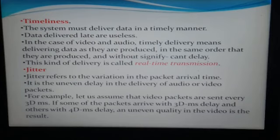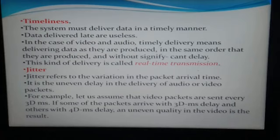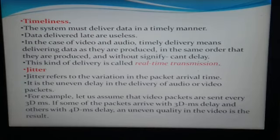The fourth characteristic is jitter. Jitter refers to the variation in packet arrival time — it is the uneven delay in the delivery of audio or video packets. For example, if video packets are sent every 30 ms but some arrive with a 30 ms delay and others with a 40 ms delay, the result is uneven video quality. If the delay is variable, the arrival time changes, meaning the data is not delivered in a proper way.